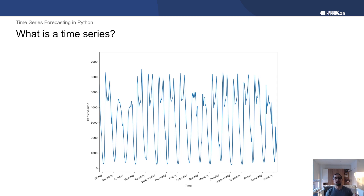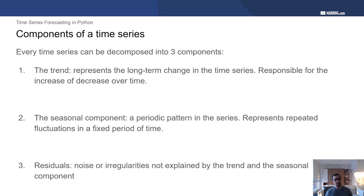Those are all examples of time series datasets, and this is the type of data that we learn to forecast with time series. Every time series can really be broken down into three components. The first component is the trend, which represents the long-term change in the time series — what is responsible for the time series to either increase or decrease over time.